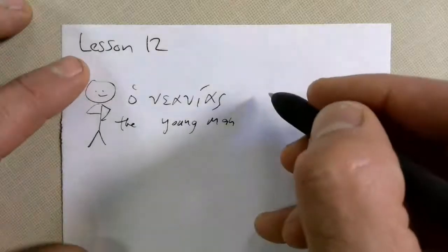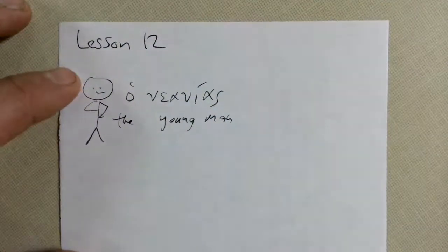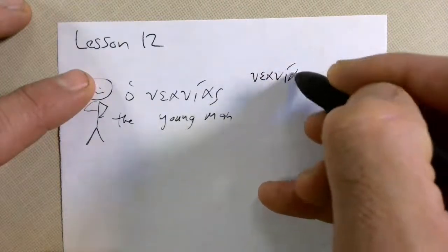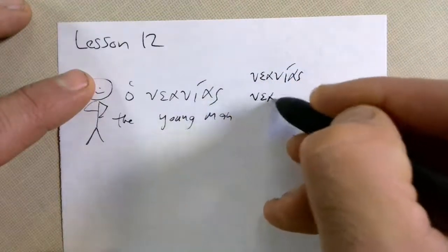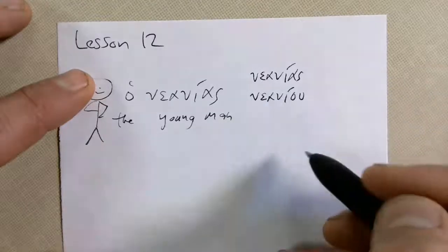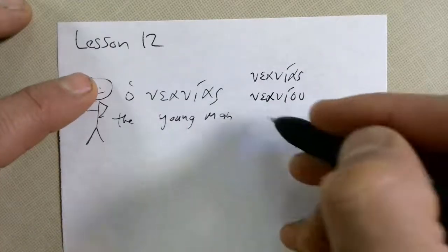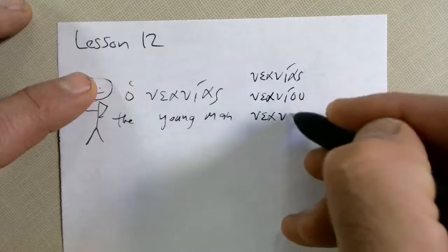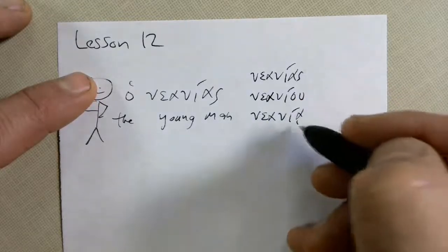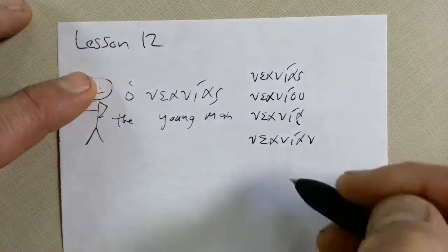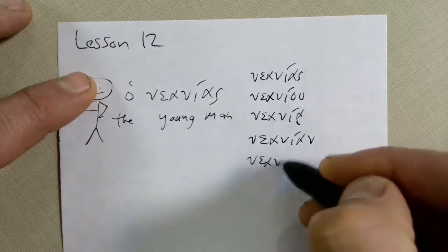So here are all the endings of Nanias, right here for you to see. We have Nanias, Naniu, and those are the only two that are different. Everything else is exactly like you would think. Next one is Naniya, and then Naniyan.